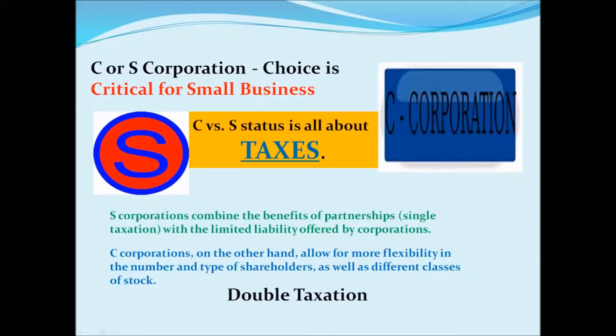C corporations pay their own tax. S corporations pass through the profits to the individual owners of the company. C corporations have a little higher tax rate, according to most analysts, just because most owners of small businesses that are taxed as S corporations file the profits on their own taxes and will have a lower individual tax rate. The difference between a C corporation and an S corporation is that most people are worried about what's called double taxation.